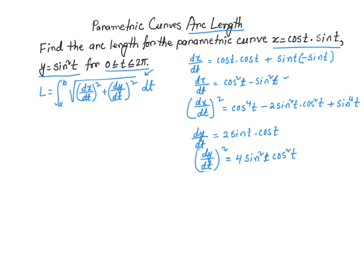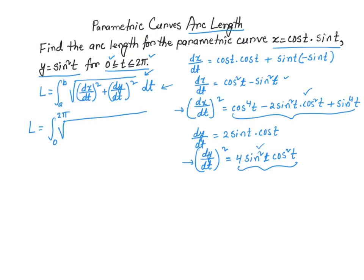Now I'm going to take these values and plug them into the integral. So L equals the integral from 0 to 2π of the square root of (dx/dt)² + (dy/dt)². Notice that 4sin²(t)·cos²(t) and the -2sin²(t)·cos²(t) combine to give +2sin²(t)·cos²(t), resulting in cos⁴(t) + 2sin²(t)·cos²(t) + sin⁴(t), all under the square root, dt.